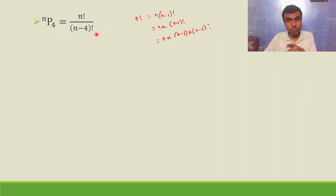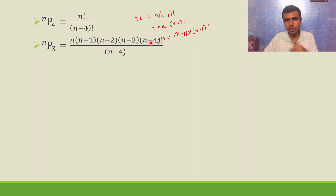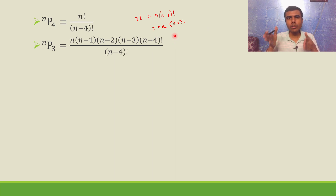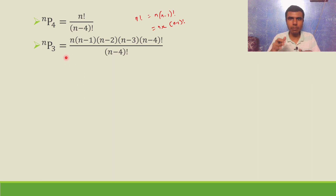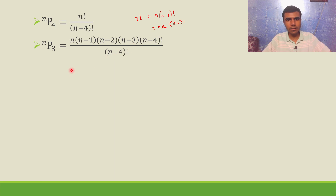And n minus 3 factorial is n minus 3 into n minus 4 factorial. In the denominator I have n minus 4 factorial, so I write n factorial as n into n minus 1 into n minus 2 into n minus 3 into n minus 4 factorial. Like 10 factorial is 10 into 9 factorial, or 10 into 9 into 8 factorial. The n minus 4 factorials cancel, leaving n into n minus 1 into n minus 2 into n minus 3.